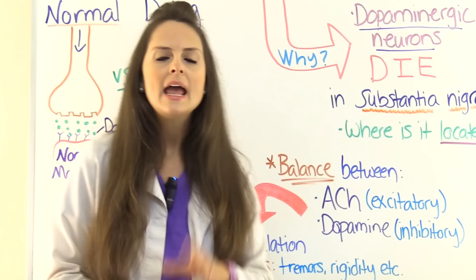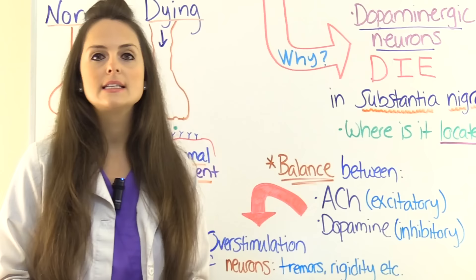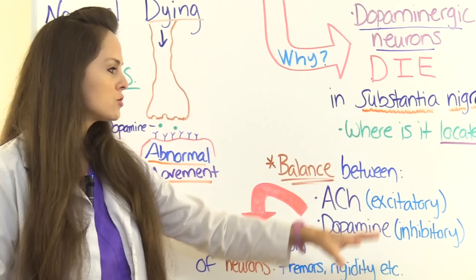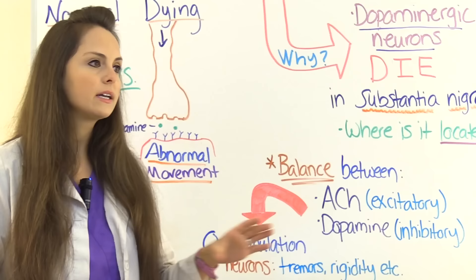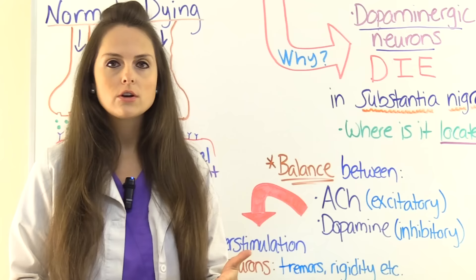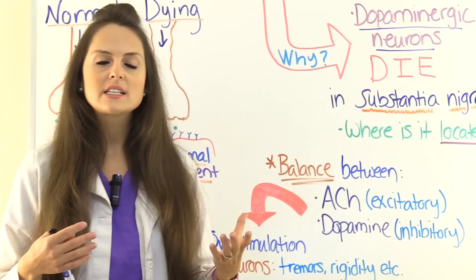One of the treatments for Parkinson's is to administer anticholinergic medications to slow down that cholinergic activity. Typically they're prescribed for younger patients who have Parkinson's disease rather than older adults, because of the side effects of the anticholinergic. These younger patients usually are experiencing extreme tremors, so we can give them these medications to help with that.